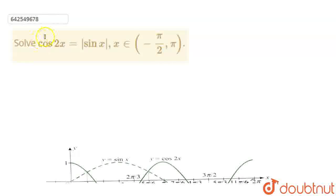Welcome to Doubtnet. We have this question: Solve cos 2x equals modulus sin x when x belongs to minus pi by 2 to pi.